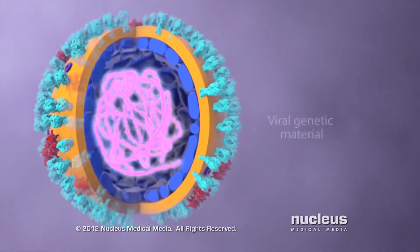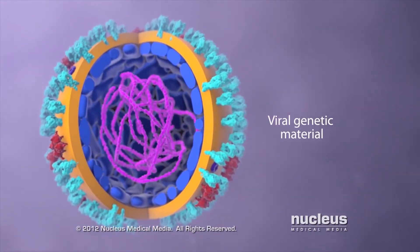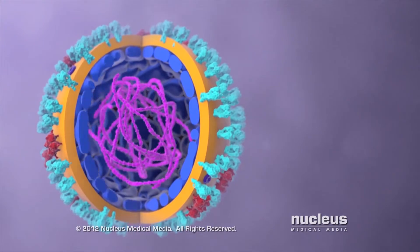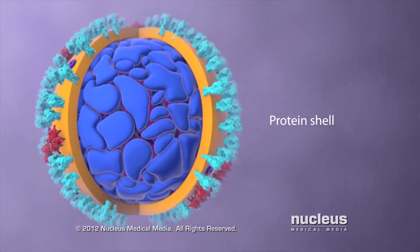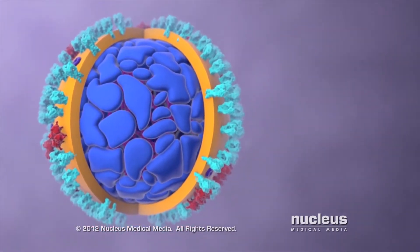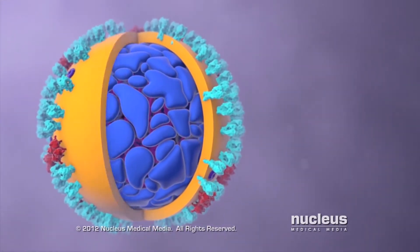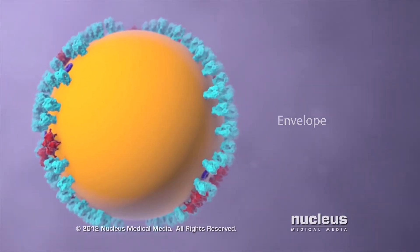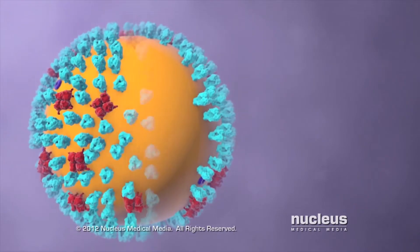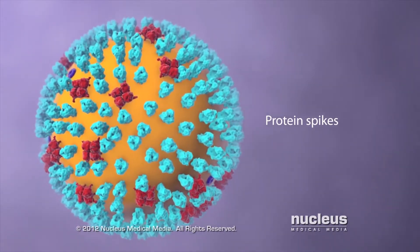Inside the virus, genetic material contains the information to make more copies of the same virus. A protein shell provides a hard, protective enclosure for the genetic material as the virus travels between the people or animals it infects. An outer envelope allows the virus to infect cells by merging with the cell's outer membrane. Projecting from the envelope are spikes of protein molecules.